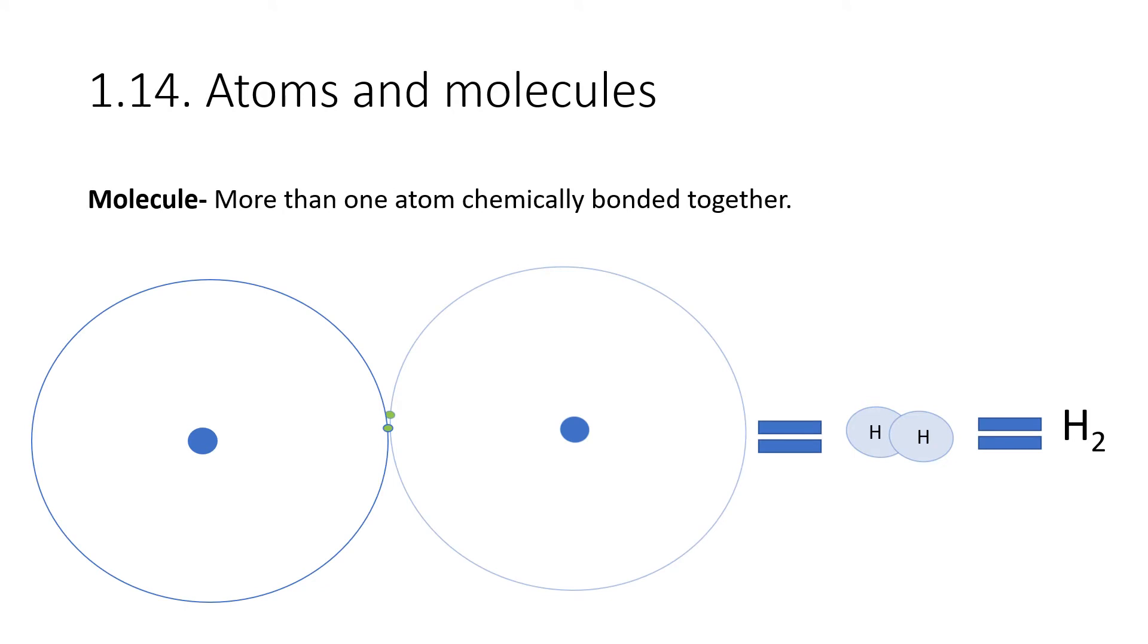The molecule is more than one atom chemically bonded together. They can be the same atom or different atoms. In this case I've showed you a hydrogen molecule. Each hydrogen atom has got one proton in the middle, those blue circles. The electron shells are overlapping because it's a covalent bond, and you've got two electrons there in green. Another way to represent this is two hydrogen with little circles overlapping, or H2 which indicates it's a hydrogen molecule, not a hydrogen atom.